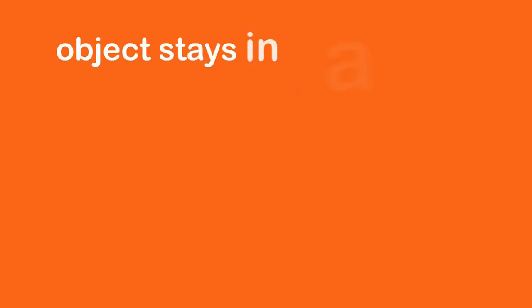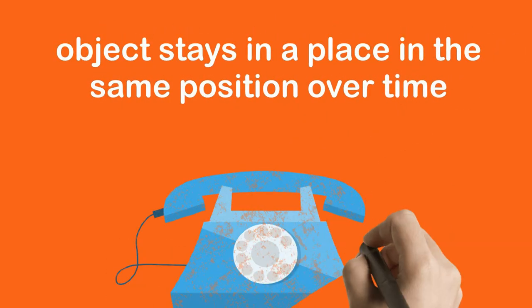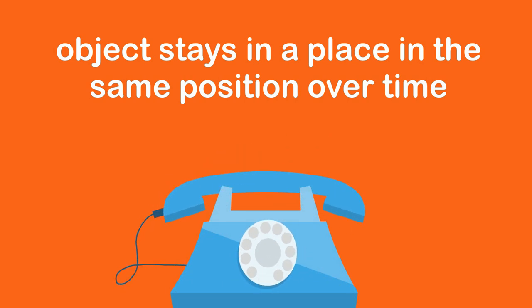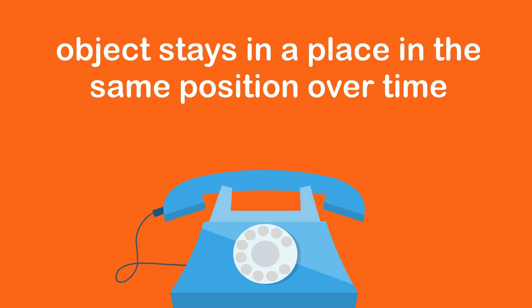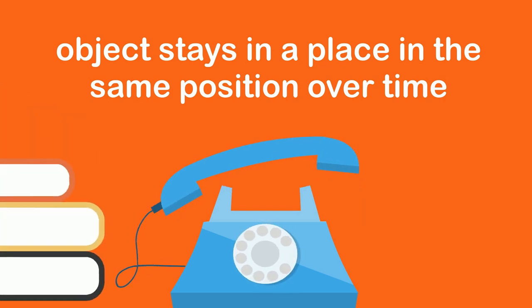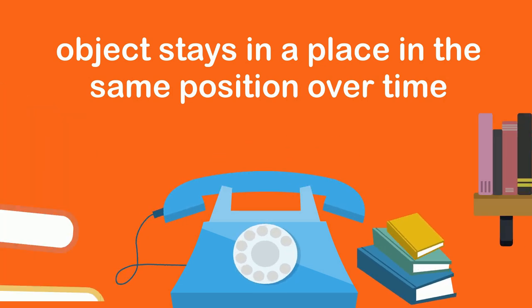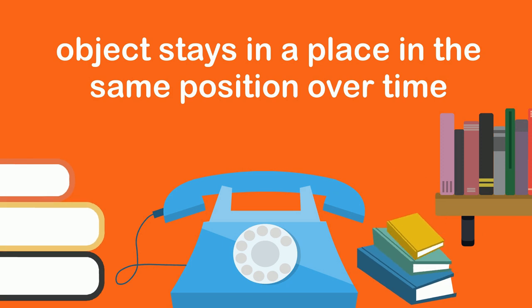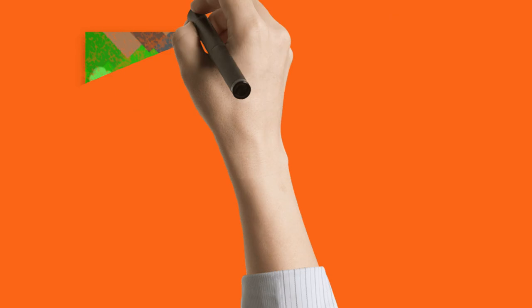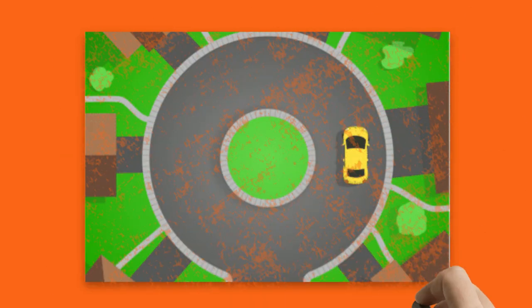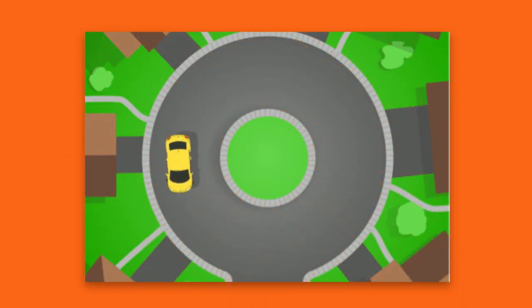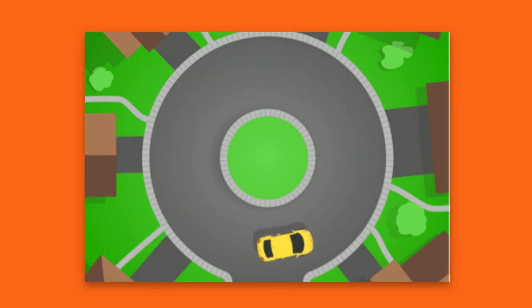If an object stays in the same position over time, we say it is still or stationary, which is the opposite of moving. In this picture, which objects do you think are undergoing movement, and which ones are still?